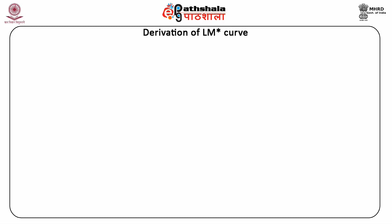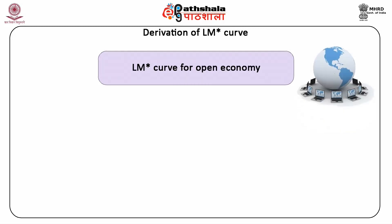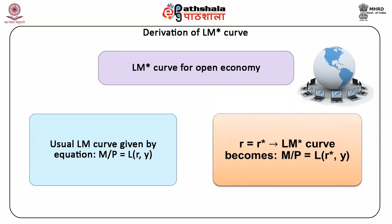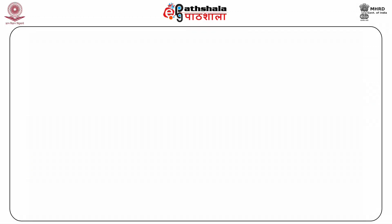Next, we will discuss the derivation of the LM star curve. The LM star curve for the open economy is derived as follows. The usual LM curve is given by the equation M/P equals L(R, Y). Since R equals R star, the LM star curve becomes M/P equals L(R star, Y). Diagrammatically, the LM star is derived as follows.